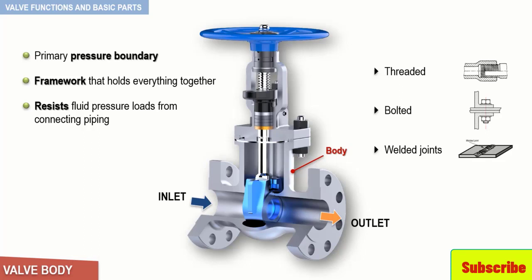Valve bodies are cast or forged into a variety of shapes. Although a sphere or a cylinder would theoretically be the most economical shape to resist fluid pressure when a valve is open, there are many other considerations. For example, many valves require a partition across the valve body to support the seat opening, which is the throttling orifice.